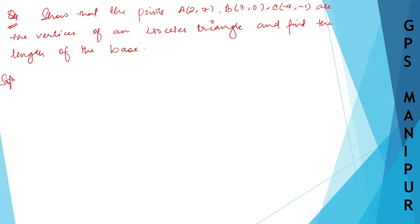So, solution. The question here says that the points A, B, C - these points are the vertices of an isosceles triangle.